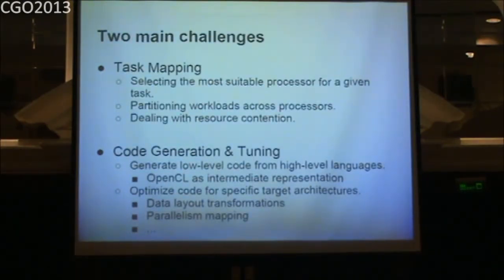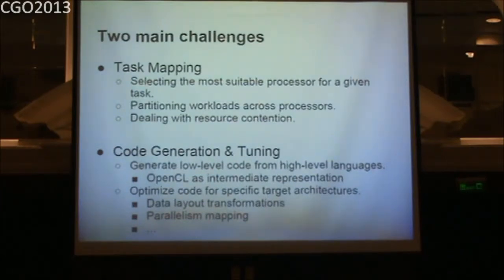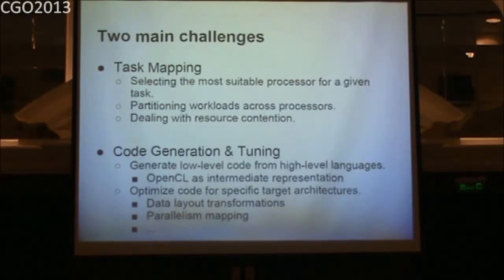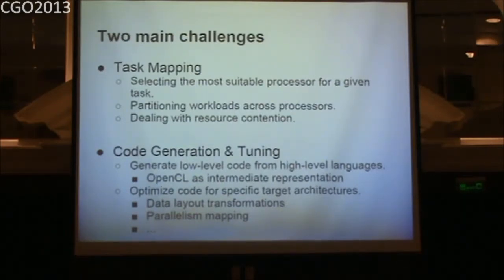The first challenge is task mapping: how do we decide which parts of our program to run on which device? Simply running anything that's data parallel on the GPU is not necessarily a good idea. We can also use both the CPU and GPU to work on a single task, deciding how to partition the work. We can even consider multi-programmed environments where other programs are running simultaneously.